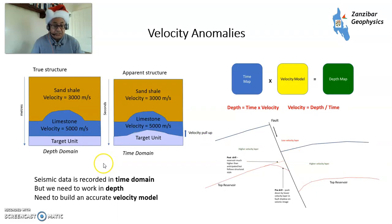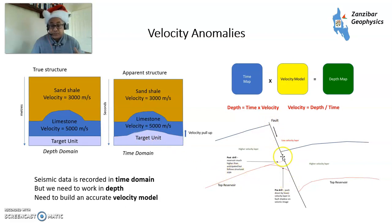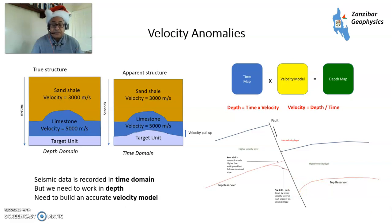There are also velocity anomalies. All seismic data is recorded in the time domain, but we need to work in depth, and the way of moving between them is depth conversion: time × velocity = depth. If you're working in the time domain, you can get distortions — for example, limestone has very high velocity and may produce a false structure. You also have a situation where a fault with a relatively low-velocity layer produces a distortion in how the fault is imaged. Depth migration takes care of that, but if depth migration isn't available, the well may have been placed incorrectly.